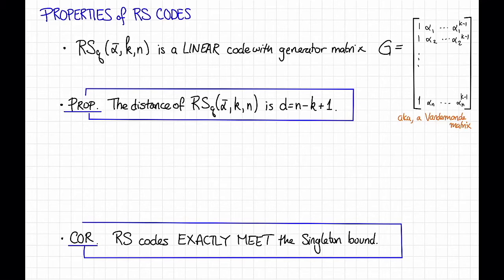The next nice property of Reed Solomon codes is that the distance of a Reed Solomon code with block length N and dimension K is exactly D equals N minus K plus 1. So here's a proof.